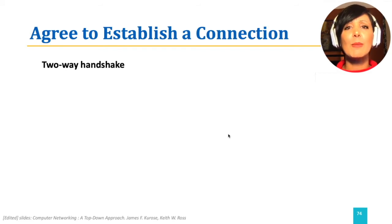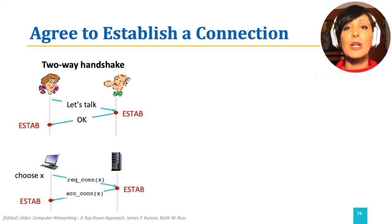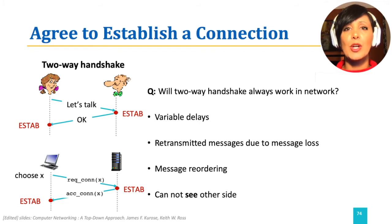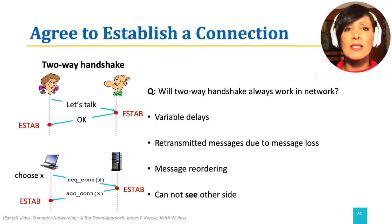Like in a human example, saying 'let's talk' and the other side accepting with 'okay.' In end systems, that could be 'request connection X' and 'accept connection X.' But the question is, would a two-way handshake work well in a network with variable delays, retransmissions, out-of-order messages, and generally with two sides not being fully aware of the state of the other side?